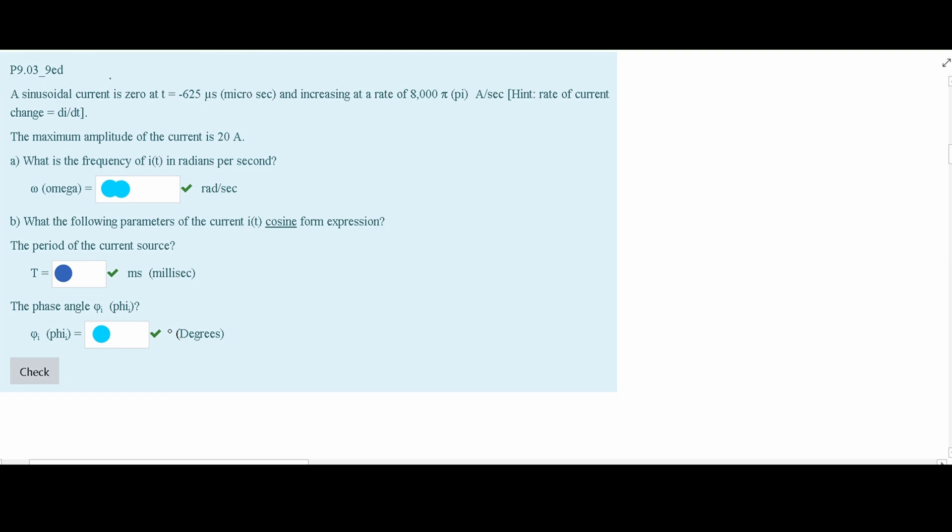In this problem, we are told that we have a sinusoidal current, and it's 0 at t is equal to negative 625 microseconds.